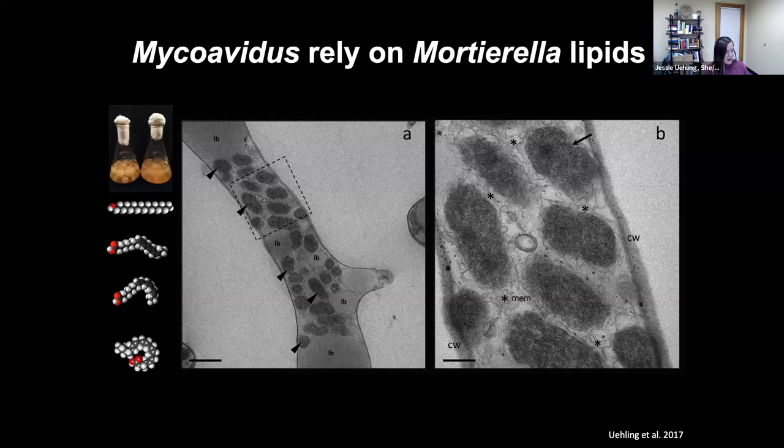Whatever the endosymbionts eat when they're present, they leave behind once they're cleared. So we can see these fatty acids accumulate in the culture — this is the same fungus: this one has endosymbionts, this one does not. Look at all those extra lipids and fatty acids. The other piece of evidence is that oftentimes these bacteria are clustered around these lipid bodies or droplets when we see them in images.